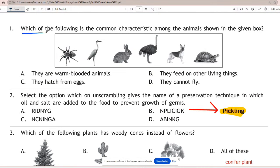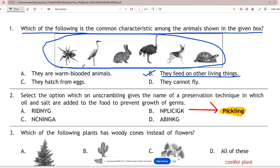Question 1: Which of the following is the common characteristic among the animals shown in the given box? Correct answer is B - they feed on other living things. Organisms that feed on other living things are called heterotrophs. All given animals are unable to make their own food, so they obtain energy and nutrients by consuming organic substances, usually plant or animal matter.